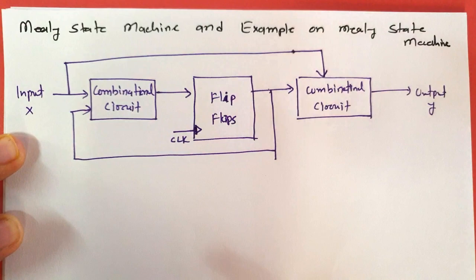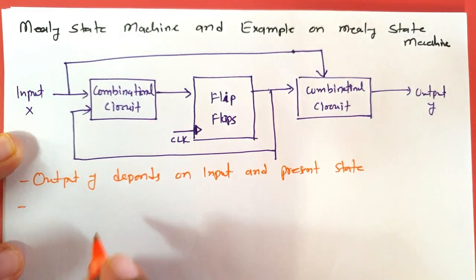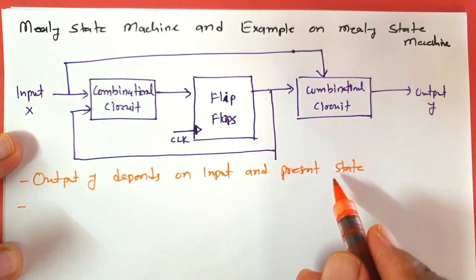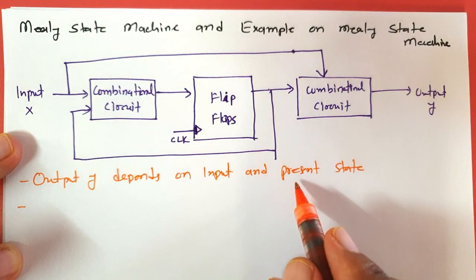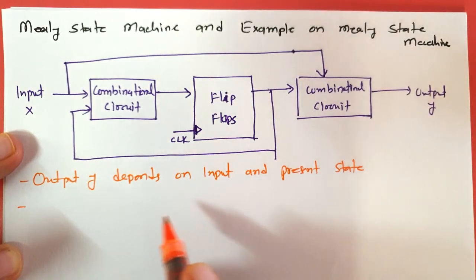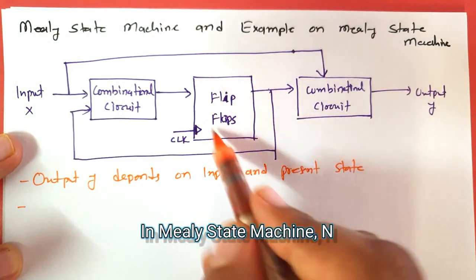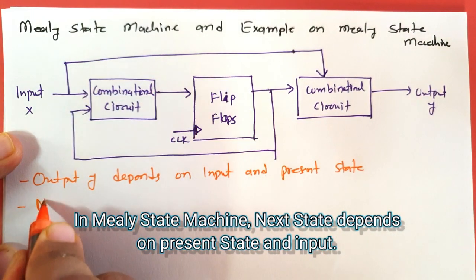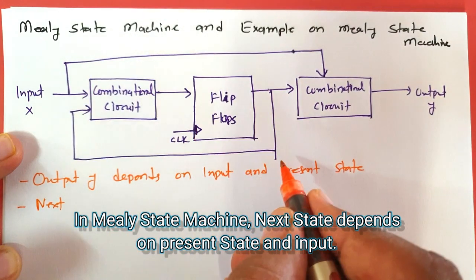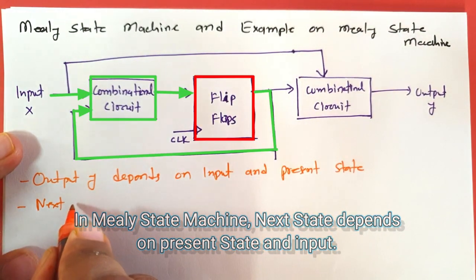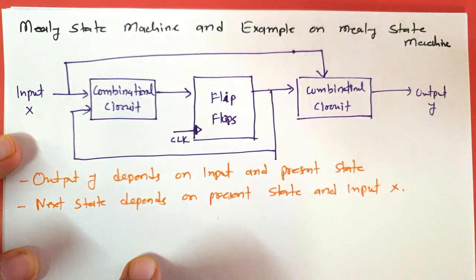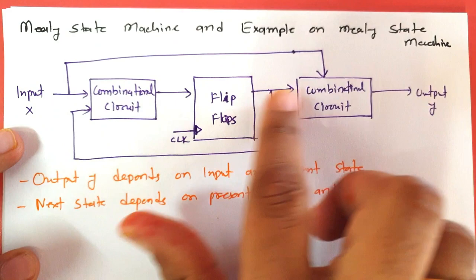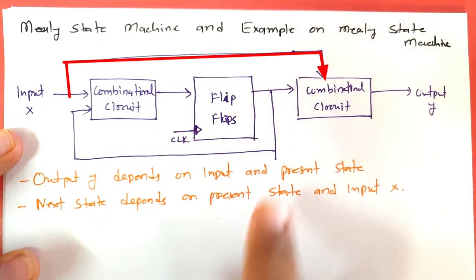Let me note down the basics. Output Y depends on input and present state. In Moore State Machine, output only depends on present state. The next state depends on the present state and present input — that is common to both. This is the key difference between Mealy and Moore State Machines.